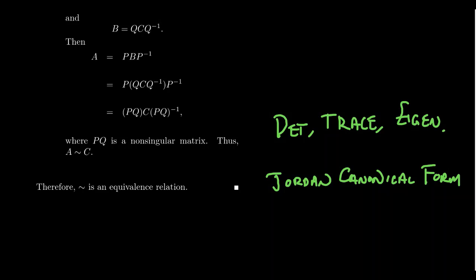Not all matrices are diagonalizable, but even those have a simplest representative in their similarity class via the Jordan canonical form. This goes beyond the scope of this lecture series, but in many branches of mathematics — including linear algebra — equivalence relations are everywhere. To prove that something is an equivalence relation, you always check three things: prove it's reflexive, prove it's symmetric, and prove it's transitive.